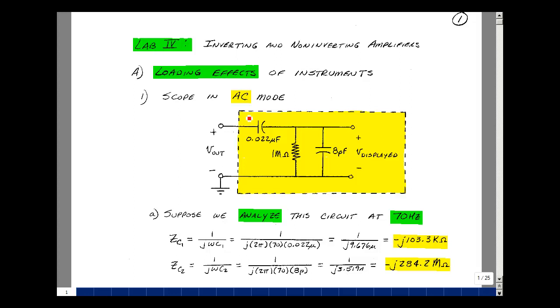In lab two, we looked at a DC mode of the oscilloscope. In this lab, we're going to do an AC mode. What that means is that there's going to be a capacitor inserted between our measurement probe and the input face of the oscilloscope.